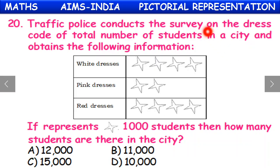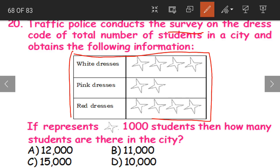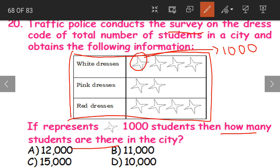Traffic police conducts a survey on the dress code of total number of students in a city and obtains the following information. If one star represents one thousand students, then how many students are there in the city? A survey is where we ask questions and other people give us answers. So from the survey, what did our police find out?